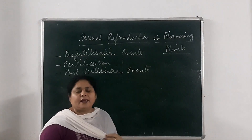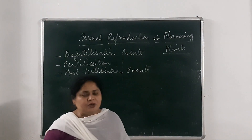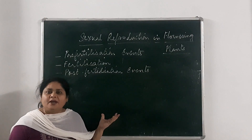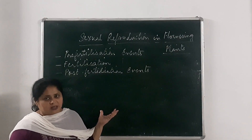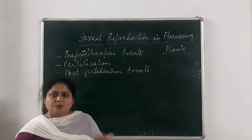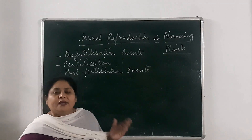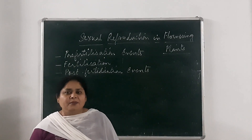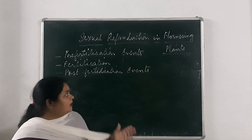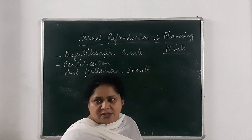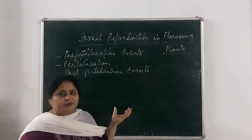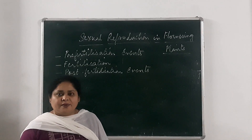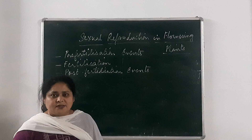In pre-fertilization events, there are two processes: gametogenesis and gamete transfer. Gametogenesis means the formation of male and female gametes within one flower or within two flowers. It depends on the type of flower, whether it is a unisexual flower or a bisexual flower. Gametogenesis includes microsporogenesis and megasporogenesis, which we have already discussed. Now we will go through the second topic, that is gamete transfer.